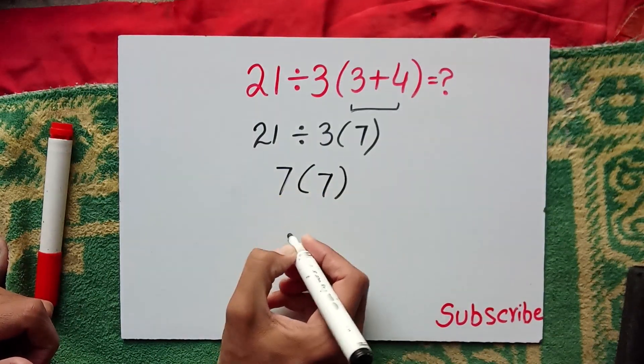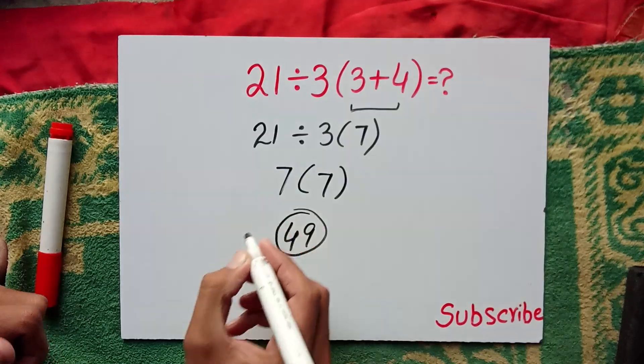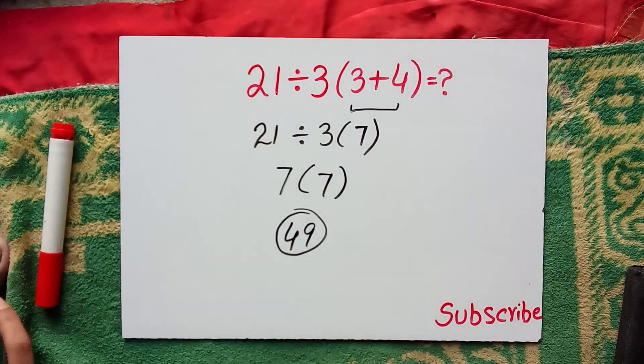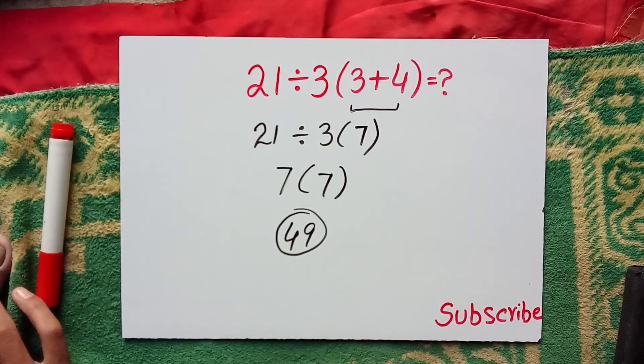And 7 times 7 equals 49. This is the final answer to this question. To see more math videos, subscribe to the channel.